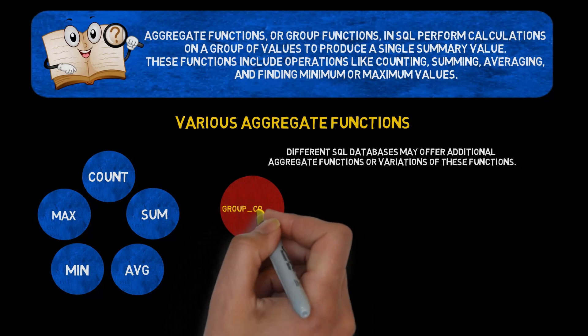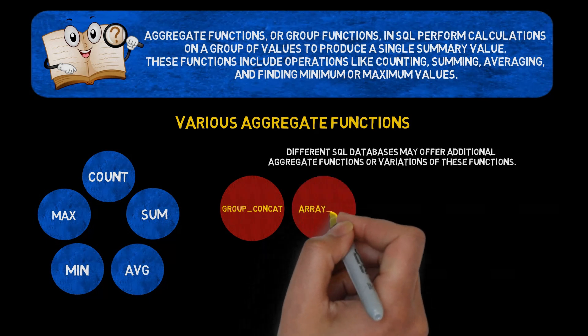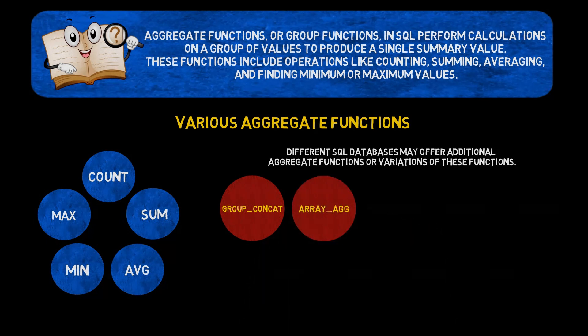Group concat concatenates values from a group into a single string. Array agg aggregates values into an array. String agg concatenates values into a single string with a specified delimiter.